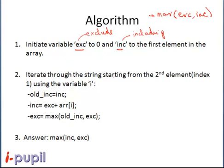So let's start iterating through the array starting from the second index. The variable we will use to iterate through the array is i. When we are including the current element, we have to exclude the previous element. So we add the current element to the previous value of exc, because to include the current element we have to exclude the previous element.